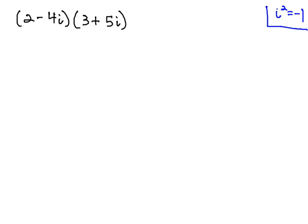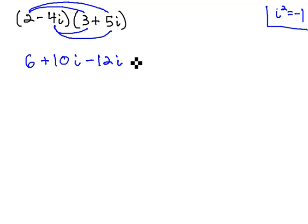So let's see what happens when we multiply these together using FOIL. 2 times 3 is 6. 2 times 5i is positive 10i. Negative 4i times 3 is negative 12i. And negative 4i times 5i is negative 20i squared.